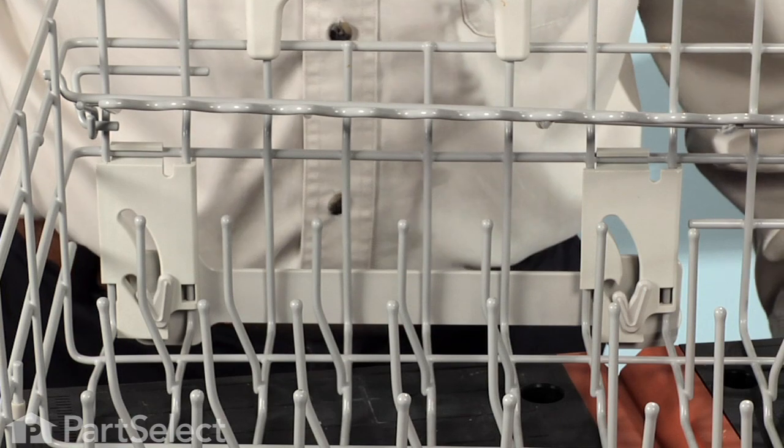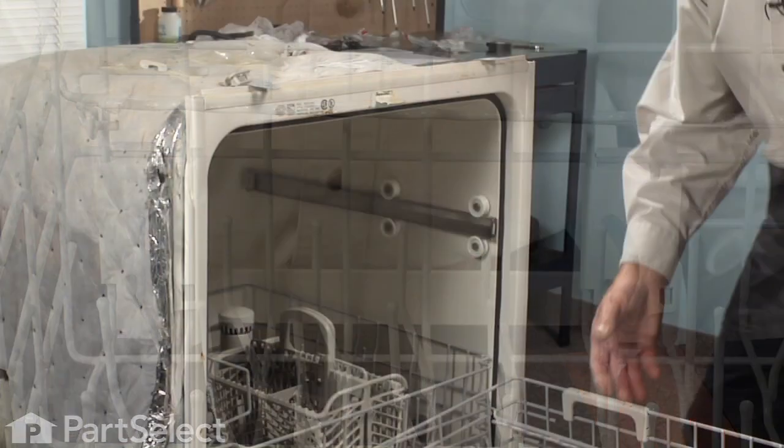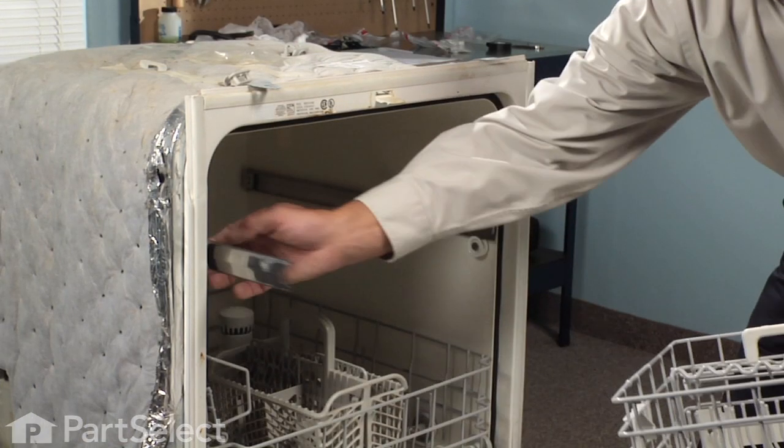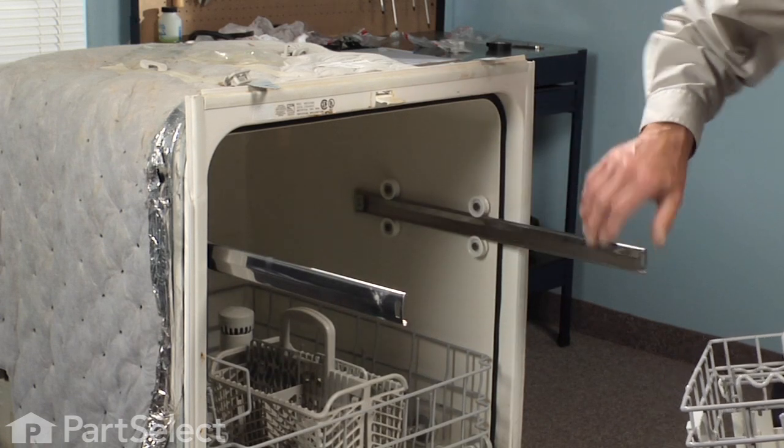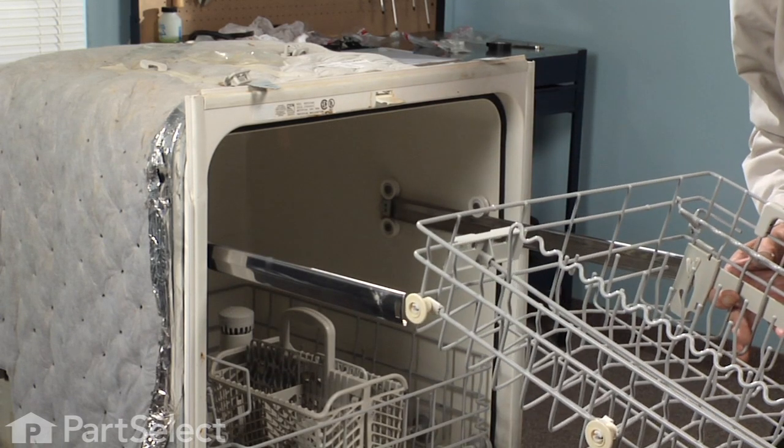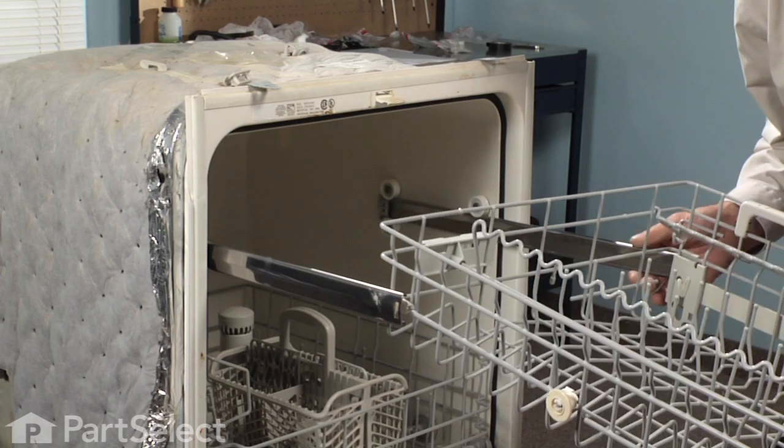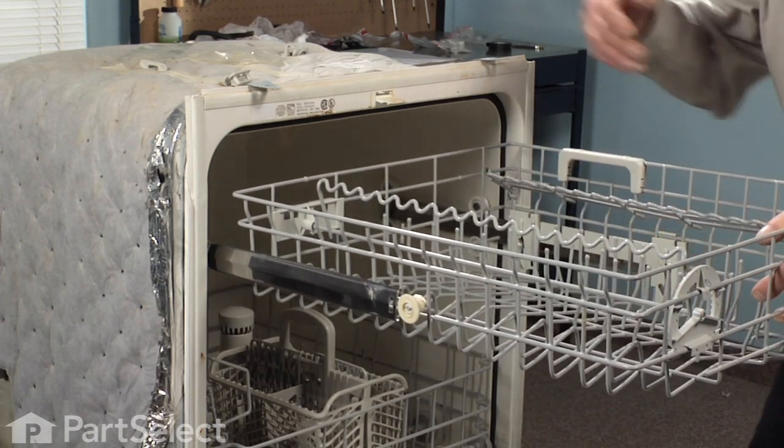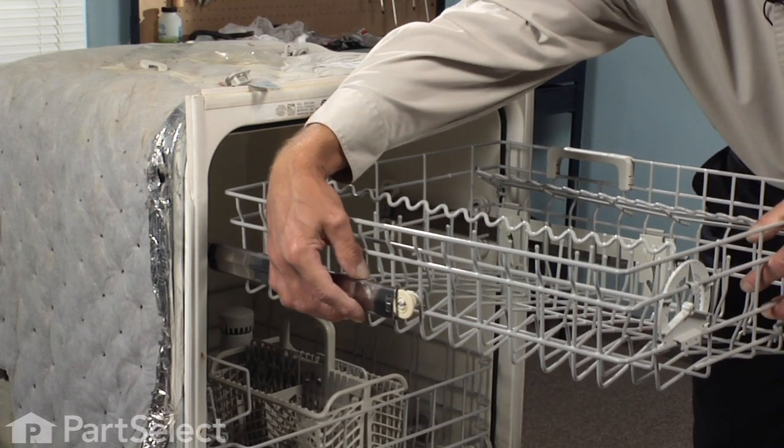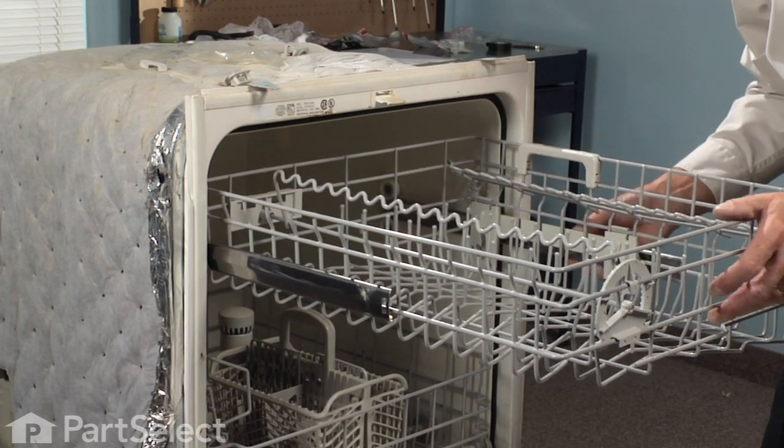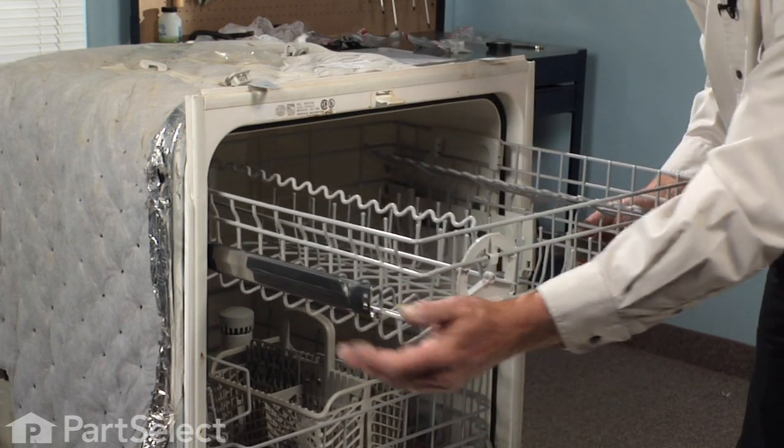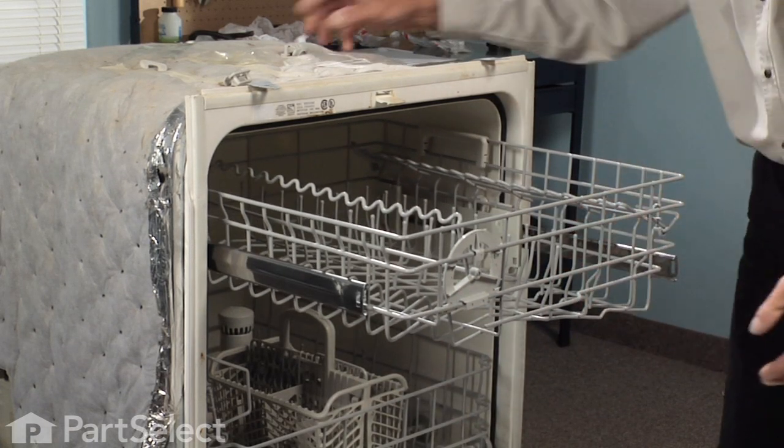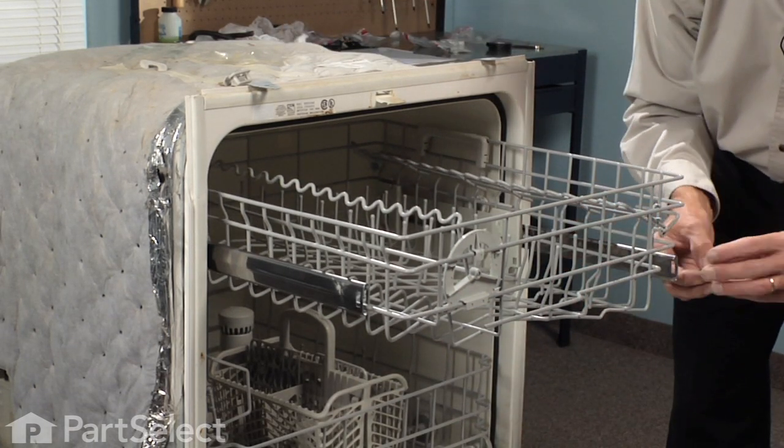Now we're ready to reinstall the rack in the dishwasher. To reassemble the rack in the dishwasher, pull the guide rails out fully, locate the rear wheels into the tracks, make sure both sides go in, and reinstall the guide stops.